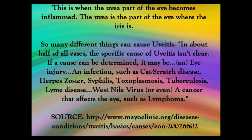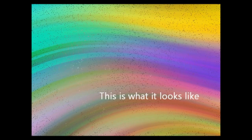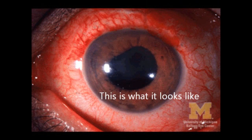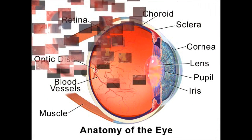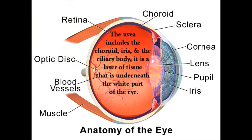Next is scleritis. Scleritis is when the white part of the eye becomes inflamed. Scleritis can be caused by a bacterial infection, a fungus, a virus, or a parasite.